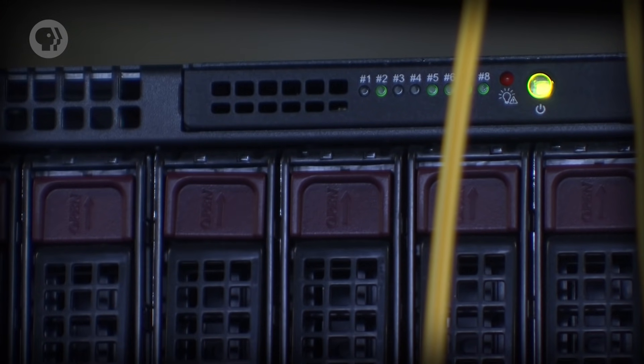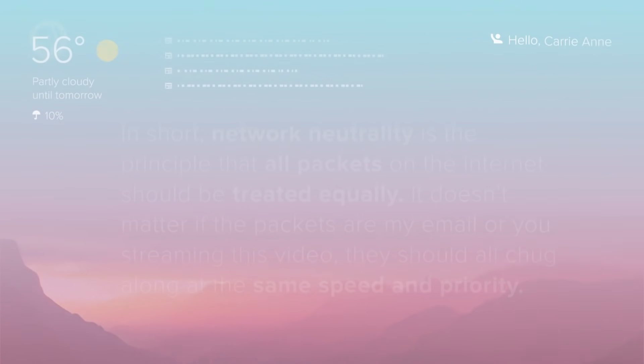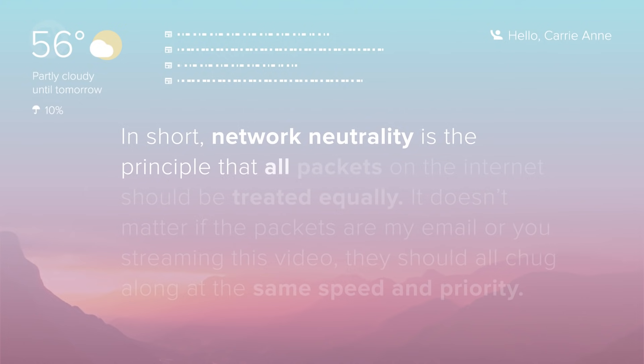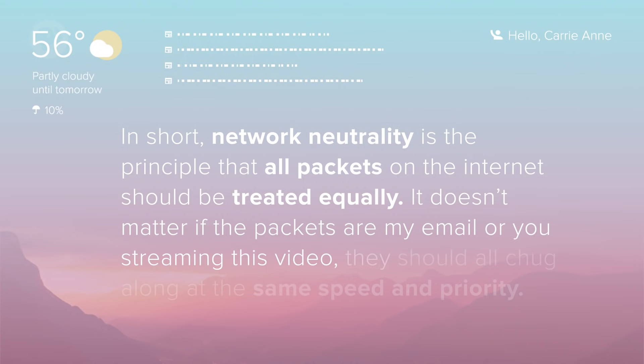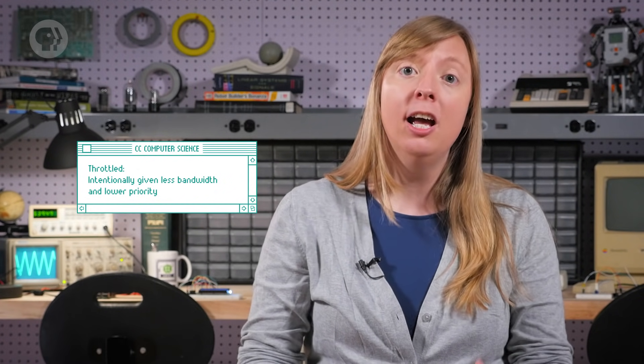Finally, I want to talk about net neutrality. Now that you've built an understanding of packets, internet routing and the World Wide Web, you know enough to understand the technical essence of this big debate. In short, network neutrality is the principle that all packets on the internet should be treated equally. It doesn't matter if the packets are an email or a streaming video — they should all move at the same speed and priority. But many companies would prefer that their data arrive preferentially. For example, a large ISP that also owns TV channels could say that they want their content delivered at high priority, while other streaming videos get throttled — intentionally given less bandwidth and lower priority.